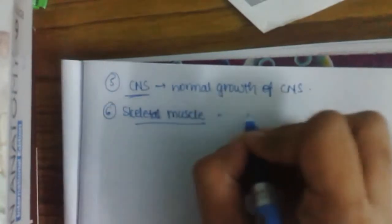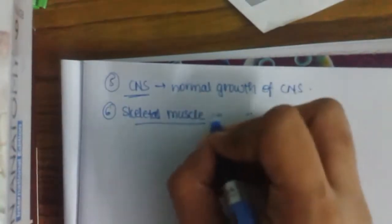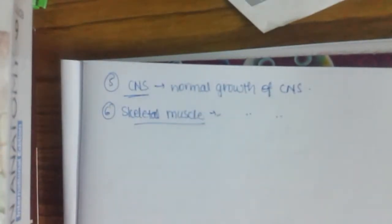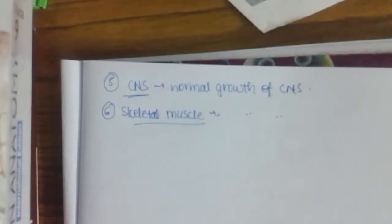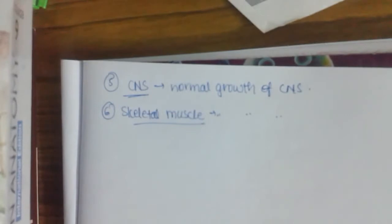Thyroid hormone is required for normal growth and functioning of skeletal muscle. Decreased thyroid hormone results in decreased muscle work — the muscles become weak and flabby. When there is increased thyroid hormone, as in thyrotoxicosis, there will be tremors and myopathy.